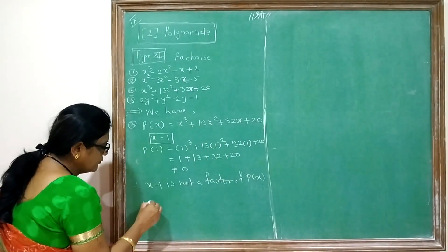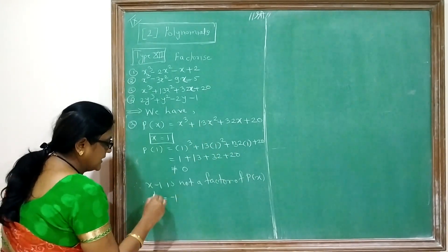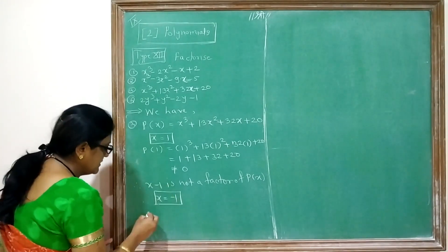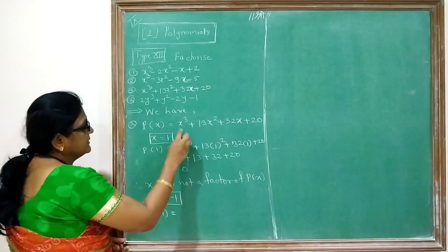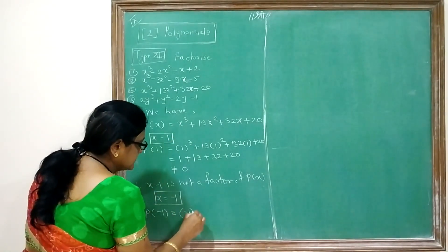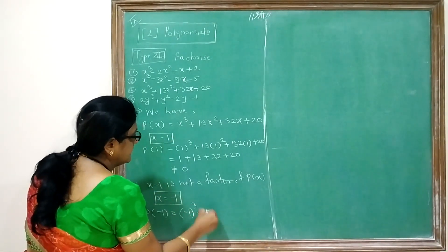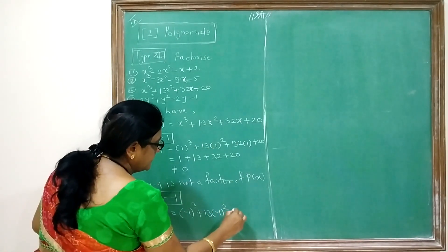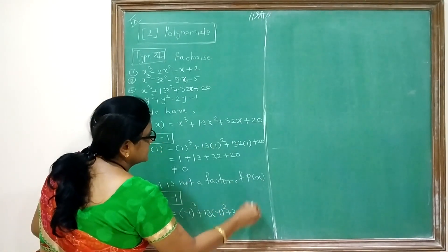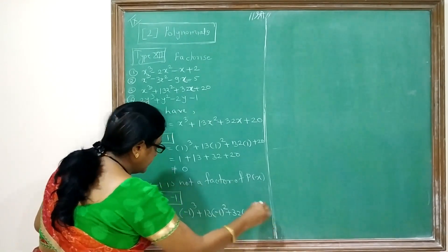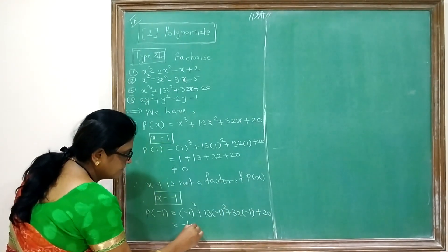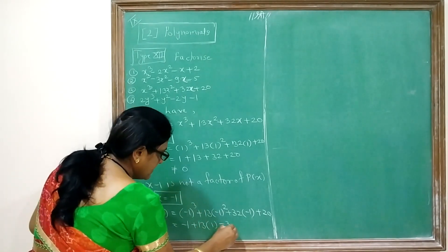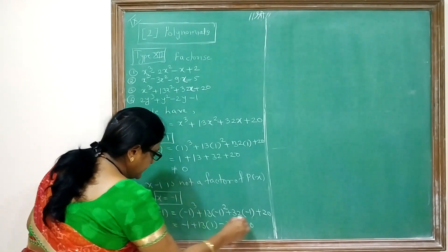Then we will put the second value x = −1. We calculate P(−1): (−1)³ + 13×(−1)² + 32×(−1) + 20. That gives −1 + 13 − 32 + 20.